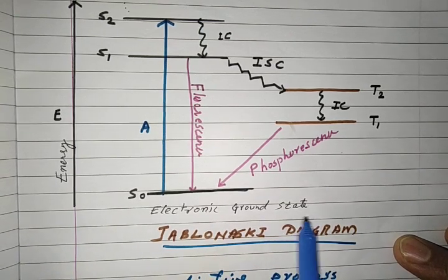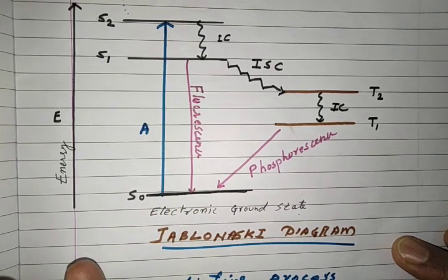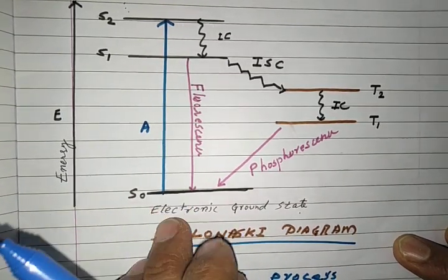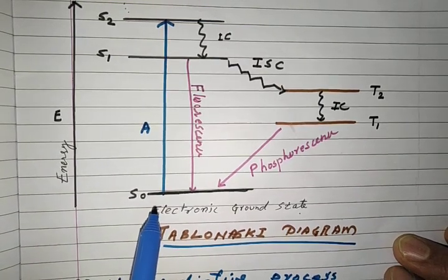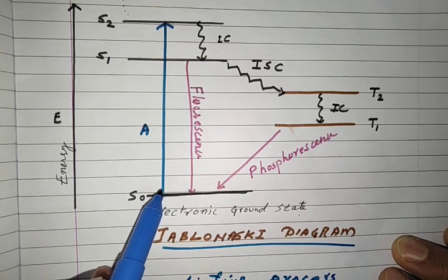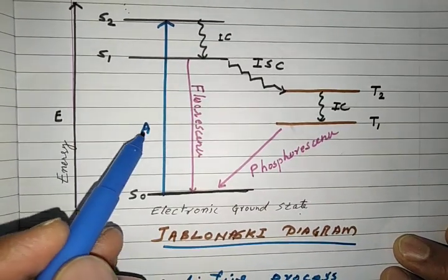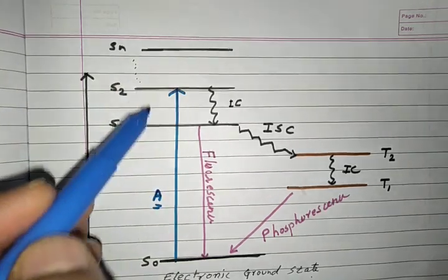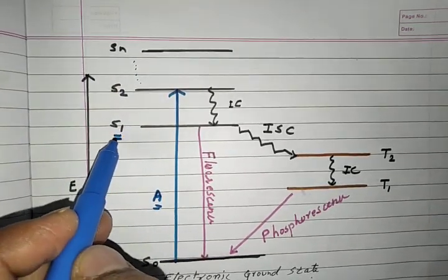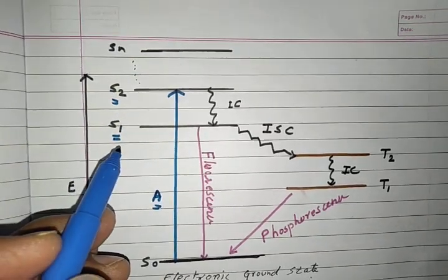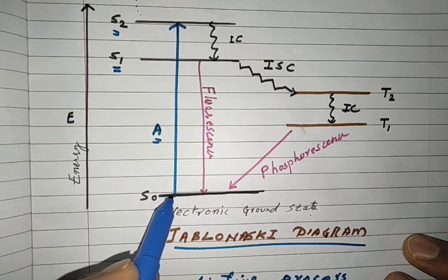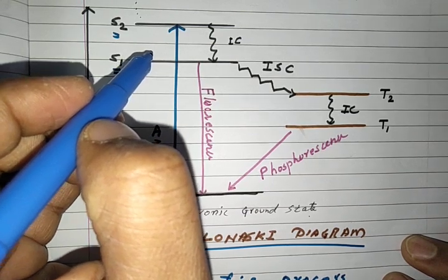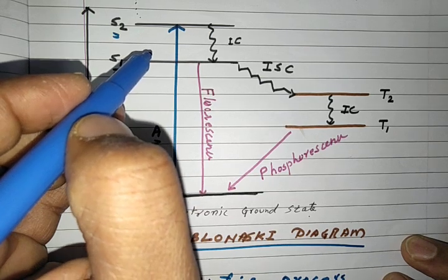This is the electronic ground state of the electron, and we consider it as a molecule here because we are dealing with organic molecules. So this is the ground state — the molecule absorbs energy from electromagnetic radiation and goes to a higher energy level, called the excited energy level. S1 and S2: the 'S' stands for singlet, meaning the electron absorbs and goes to the highest excited level without any change in its spin — the spin remains the same — and therefore it is called singlet.